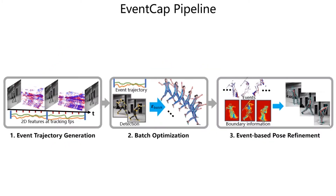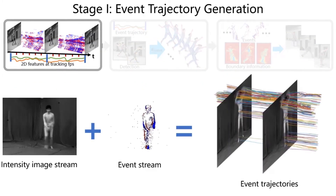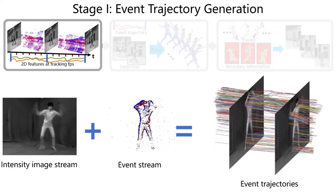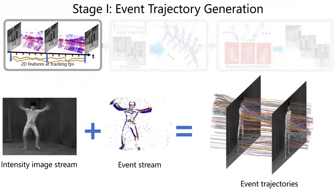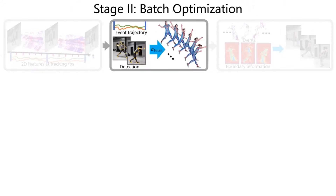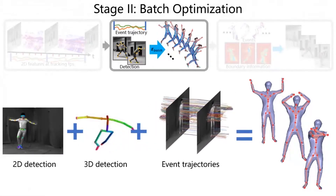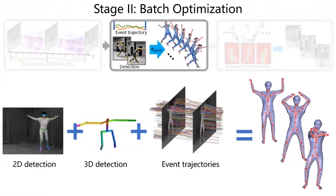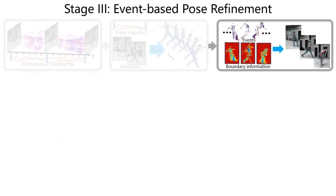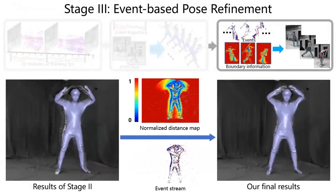Our motion capture pipeline consists of three stages. First, we track sparse event patches in an asynchronous manner based on the hybrid input from the event camera. Then these patches are aligned to compose spatiotemporal event trajectories. Second, we formulate the motion capture as a batch optimization problem, where we jointly optimize for all the tracking frames in a batch. We fit the skeletal motion to the event trajectories in a batch, as well as to the CNN-based body key point detections from the low frame rate intensity images. Finally, we refine the pose estimation by fitting the human template silhouette to the event stream.